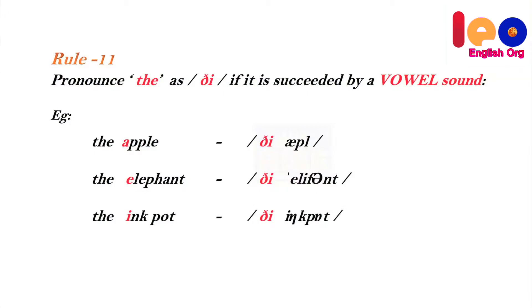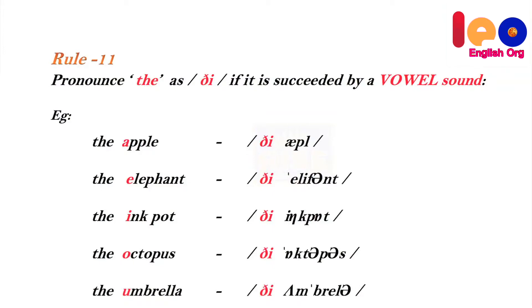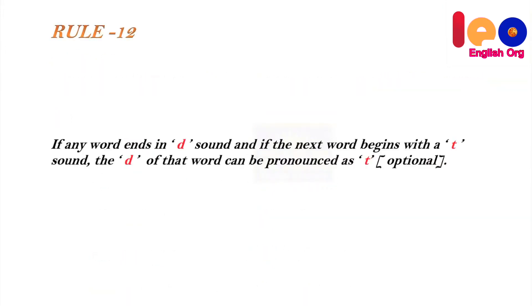...ink pot, the octopus, the umbrella. Rule 12: If any word ends in a 'd' sound and the next word begins with a 't' sound, the 'd' of that word can be pronounced as 't'.